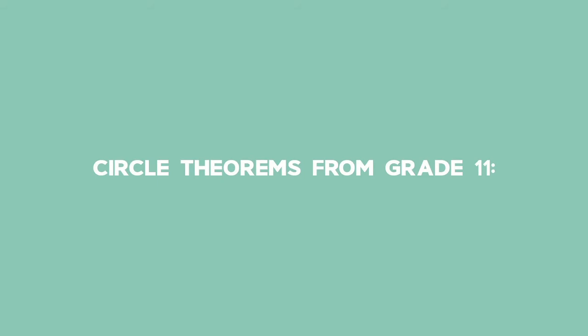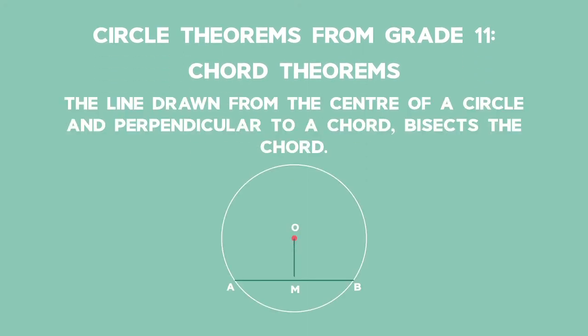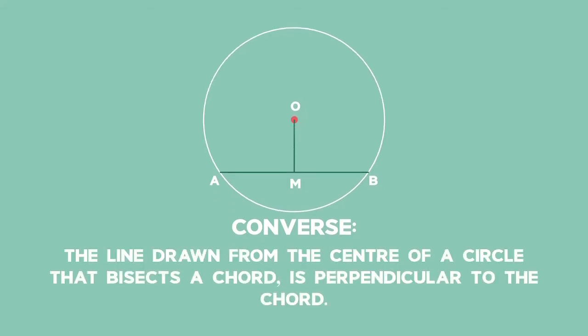Circle theorems from grade 11. Chord theorems. The line drawn from the centre of a circle and perpendicular to a chord bisects the chord. Converse. The line drawn from the centre of a circle that bisects a chord is perpendicular to the chord.